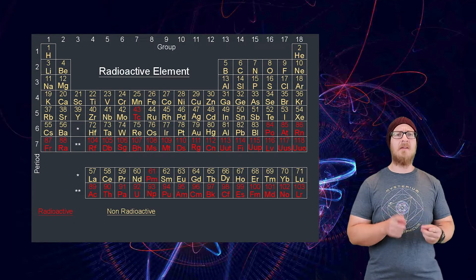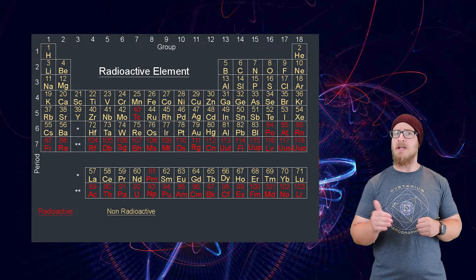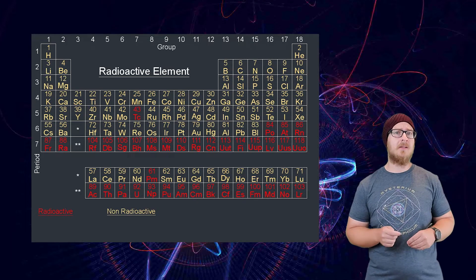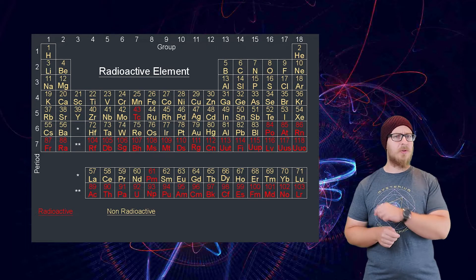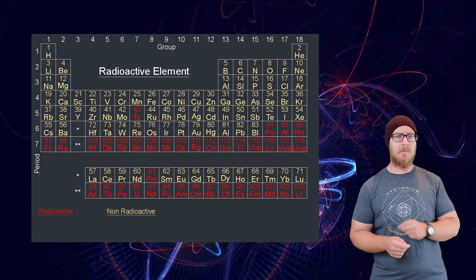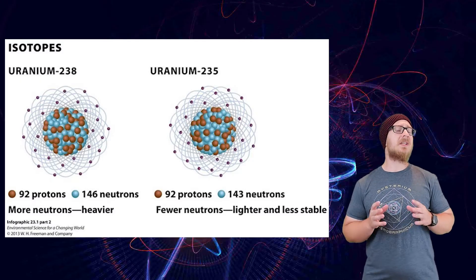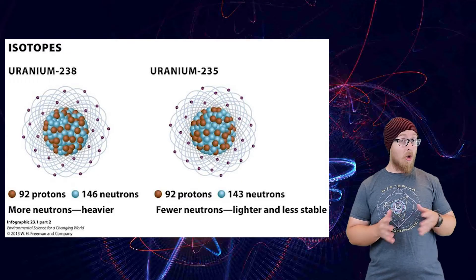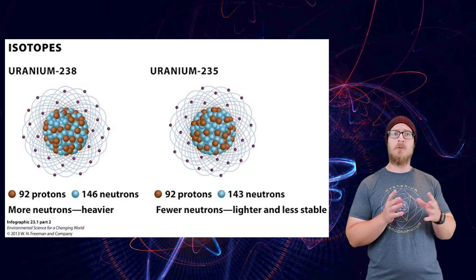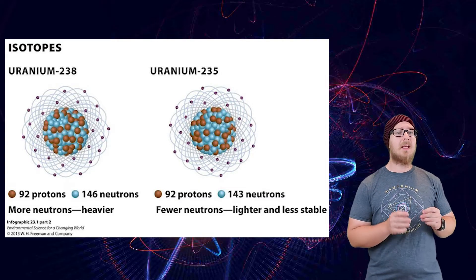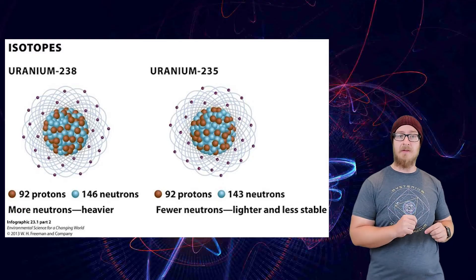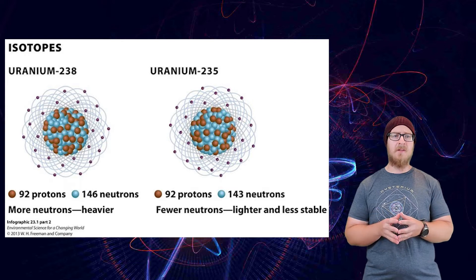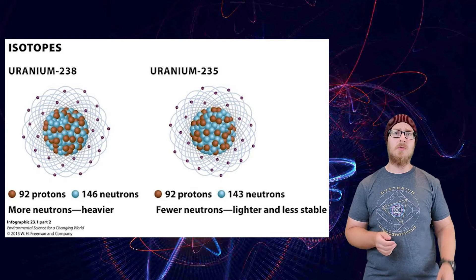Just about every element above atomic number 83 is naturally only found as an isotope and is radioactive. Those are the ones we use for nuclear energy, most specifically uranium. Uranium exists naturally as two different isotopes: about 99.3% of all uranium found on Earth is uranium-238, and 0.7% is uranium-235. Uranium-238 is radioactive, but barely — it has a very long half-life and is not particularly useful as a source of nuclear energy.